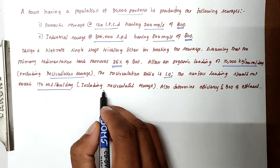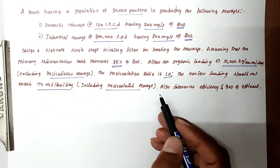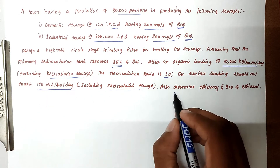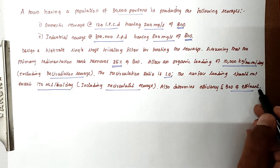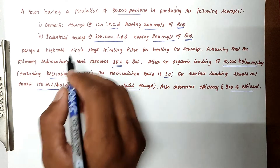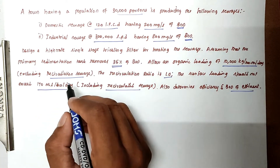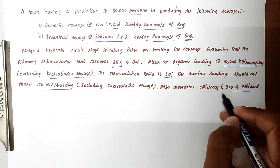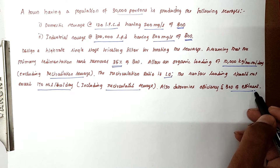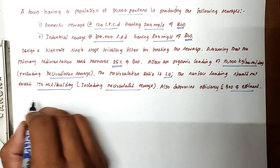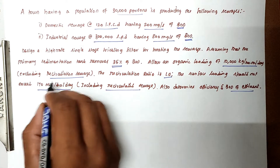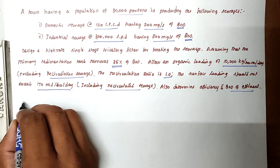We also need to determine the efficiency of BOD removal and the BOD of the effluent. These are all the given values, and they are asking for efficiency of BOD, the size of trickling filters, and BOD of effluent. Now we have to find the solution.